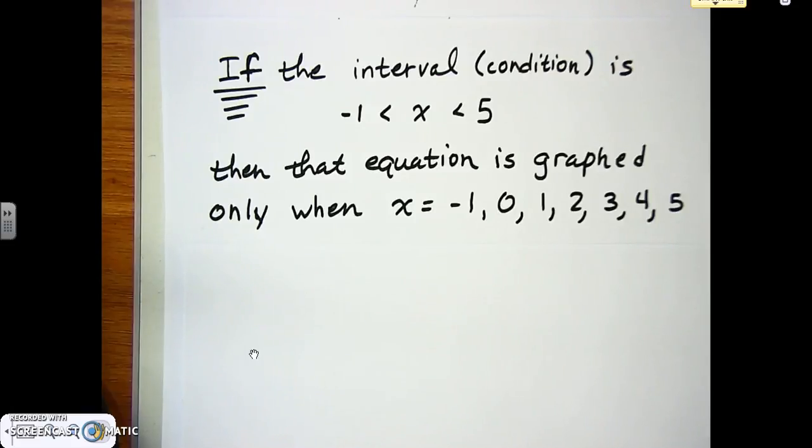-1 < x < 5. At that point, you know you're not going to graph the whole equation; you're only going to graph between -1 and 5. That equation is graphed only when you have x = -1, 0, 1, 2, 3, 4, 5. Now some of you are like, 'Well, Mr. Hall...'